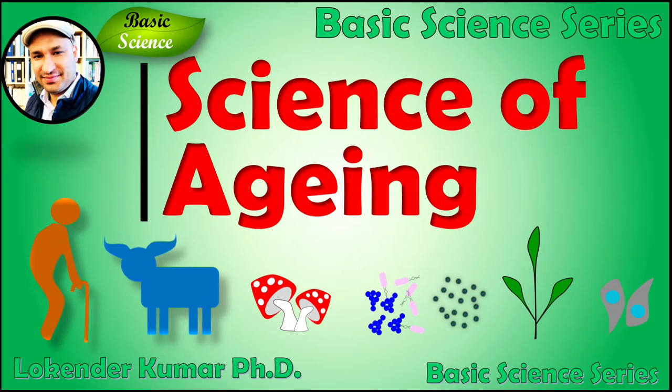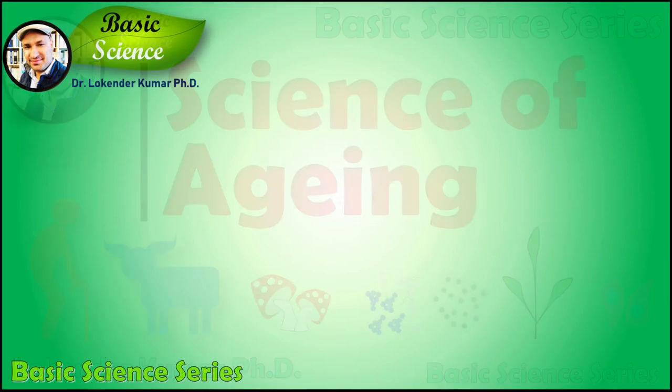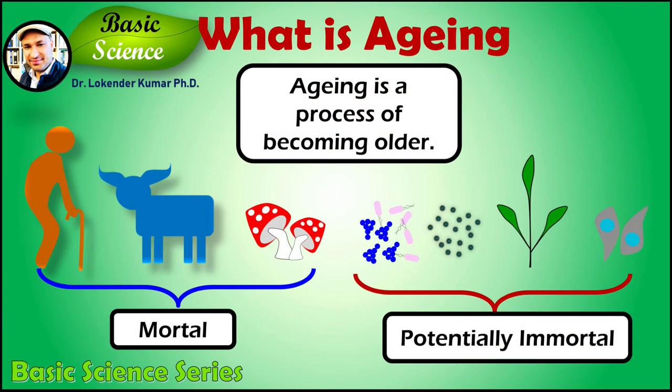Aging is a process of becoming older. The term refers especially to human beings, many animals, and fungi, whereas bacteria, plants, and some simple animals are potentially biologically immortal. Plants are potentially immortal organisms that will live forever if their environmental conditions are met — plants only die because of starvation or disease. If their needs are met, they will grow indefinitely.